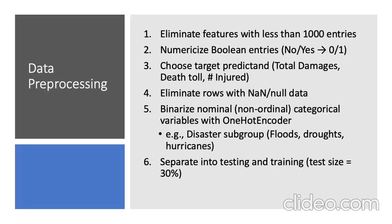We had to do quite a bit of data preprocessing before starting on the machine learning side because there's quite a bit of mess in the MDAT dataset. The first thing we did was eliminate features with less than 1,000 entries. We're starting with about 14,000 entries, so anything that has 13,000 of them that are null, we get rid of.